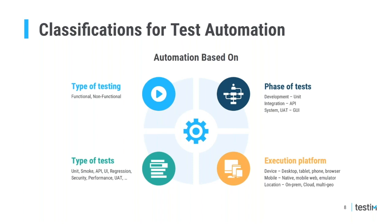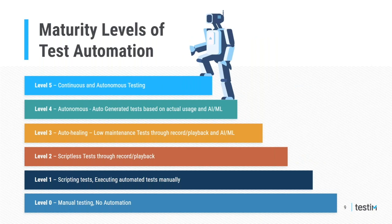Test automation can be classified in multiple ways: based on type of testing such as functionality or performance, or by type of test being executed — unit test, smoke test, API, UI, and so on. It can also be categorized based on which part of the SDLC like development, integration, or system, and where you are executing the test — desktop, mobile, web, multi-geo, and so on. This is important to identify the right strategy, right toolset, and set the right expectations.